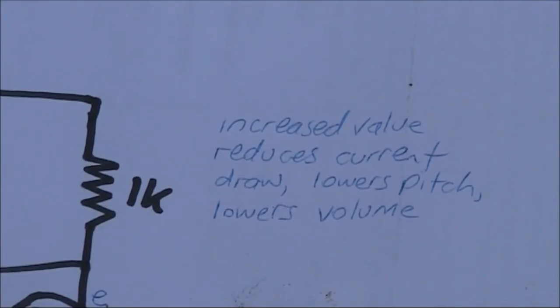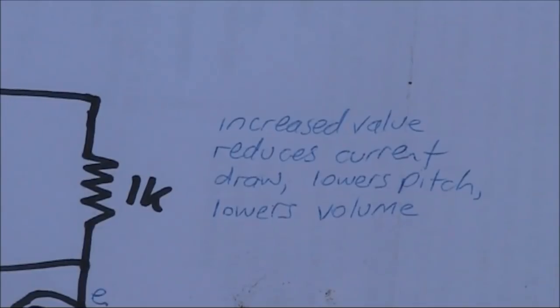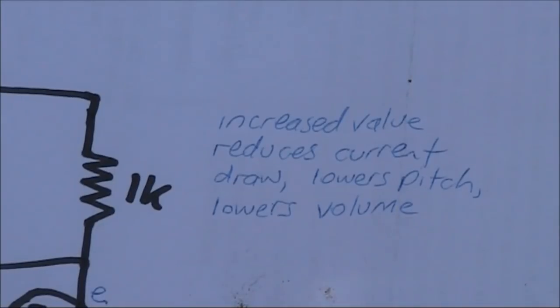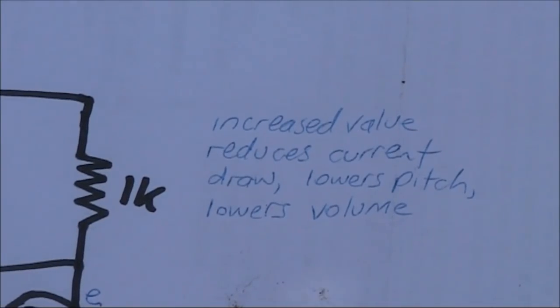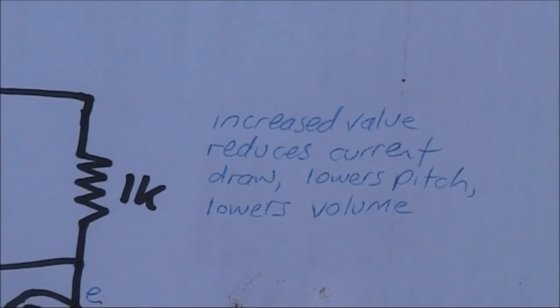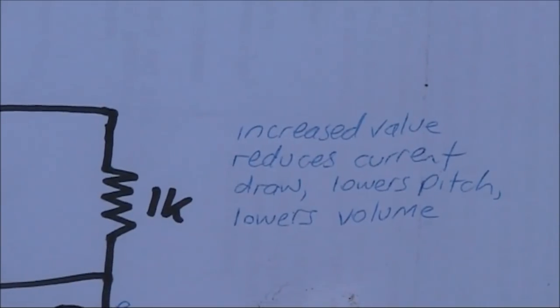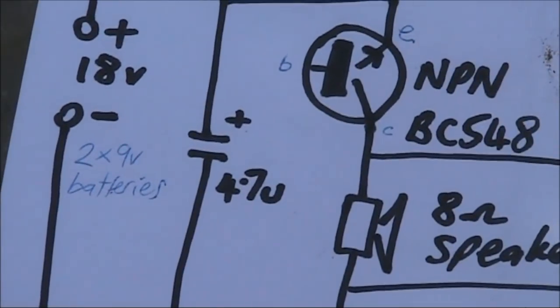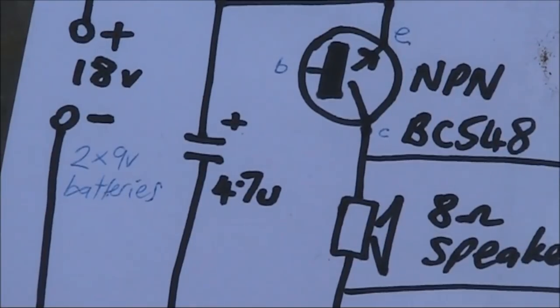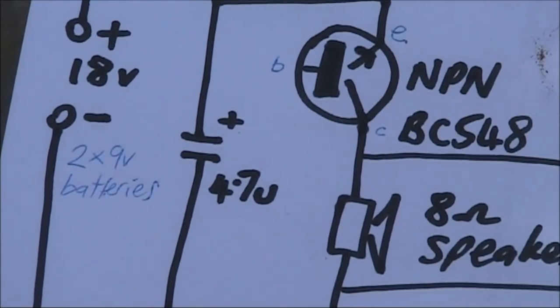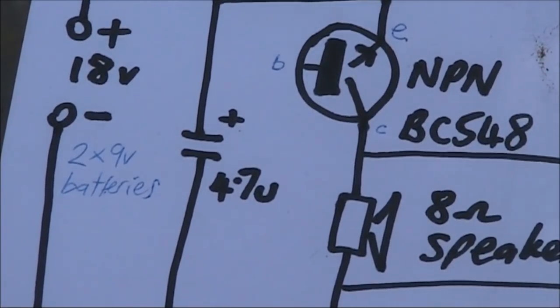With the 1K resistor, about 11 milliamps is drawn. If you wanted to get more battery time from your 9-volt batteries, and are willing to tolerate a lower volume, then you could increase its value up to, say, 3.3 or 4.7K. You'll then get current down to about 3 milliamps. The tone pitch also lowers, but if that's not suitable, you could compensate by reducing the value of the 4.7 microfarad capacitor.